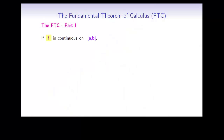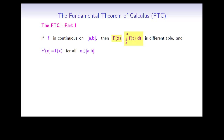Here is the first part of the theorem. If f is continuous on the closed interval [a, b], then F of x, given by the integral from a to x of f(t) dt, is differentiable, and F prime of x is equal to f of x for all x in [a, b]. This means that F is an antiderivative of the function f.